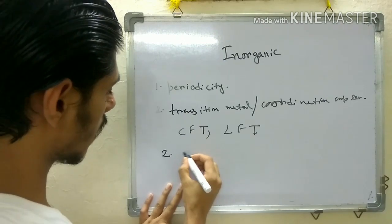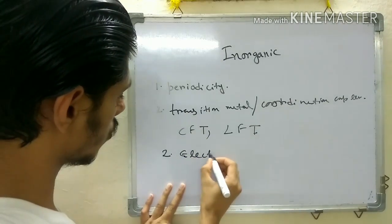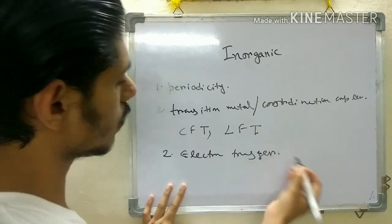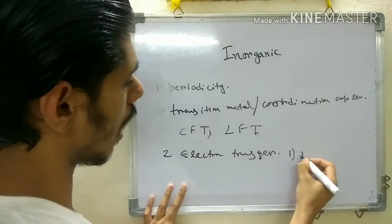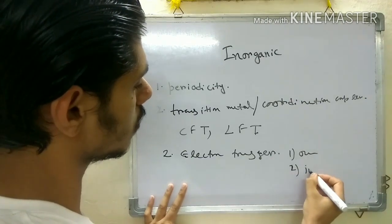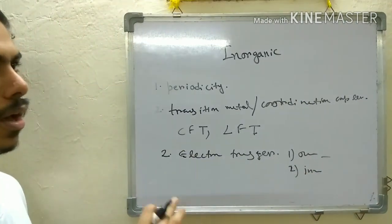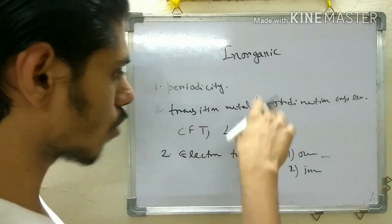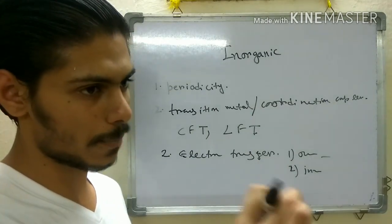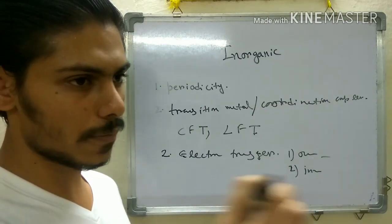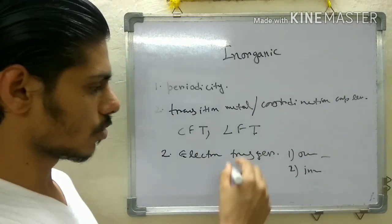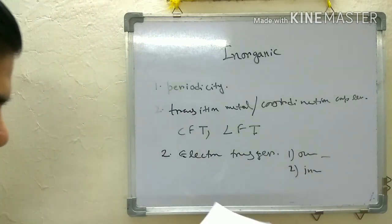You also have to do electron transfer mechanisms. There are two types: outer sphere and inner sphere. You can read all these coordination compound topics from the Huheey book — the chapter on coordination compounds in that book is very excellent.